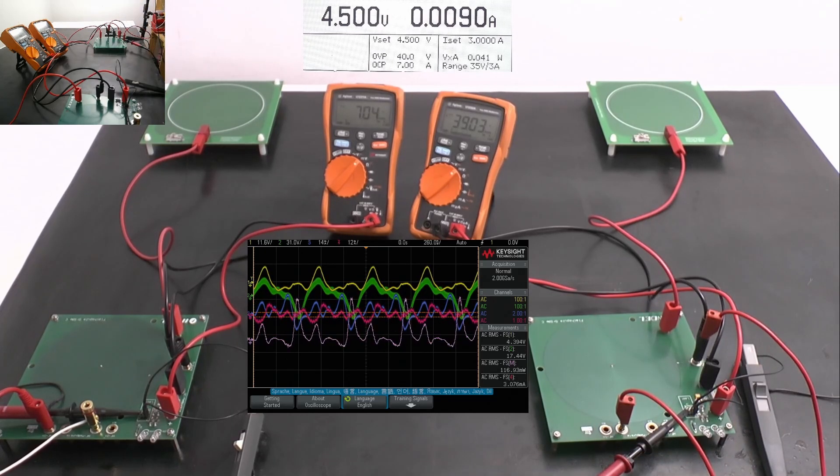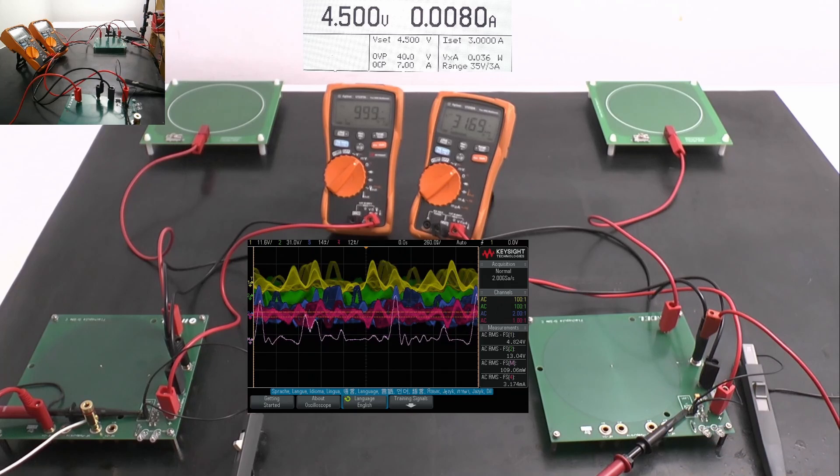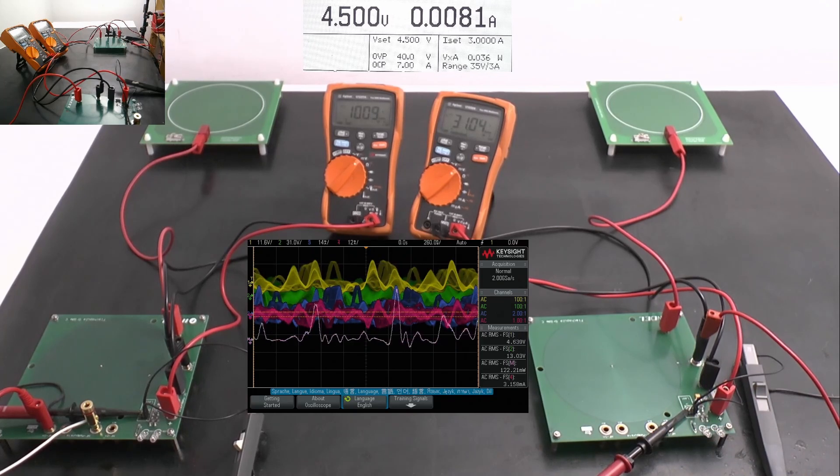Channel 1, yellow is the input voltage. It's at 4.3, 4.4V. I take it out. It's 4.6, 4.7. It doesn't make a big difference either.